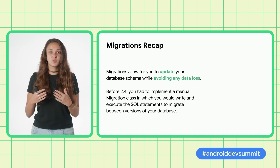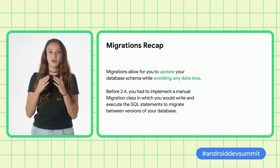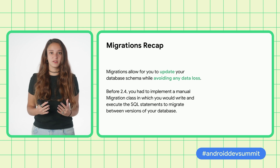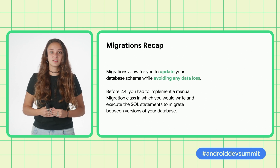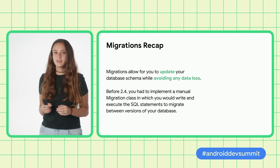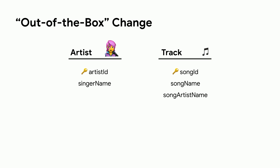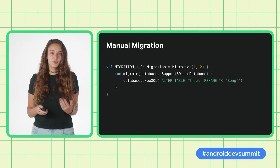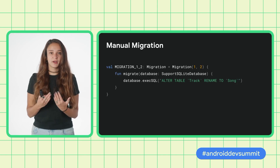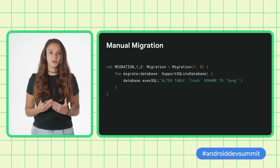This meant that you would risk ending up implementing a migrate function involving a lot of long and complex SQL queries, increasing the risk for any errors. Let's walk through an example of this scenario. Say you have a database with two tables, artist and track. Let's say you would like to rename the table track to song. If you were to make this change using a manual migration, this is how that would work.